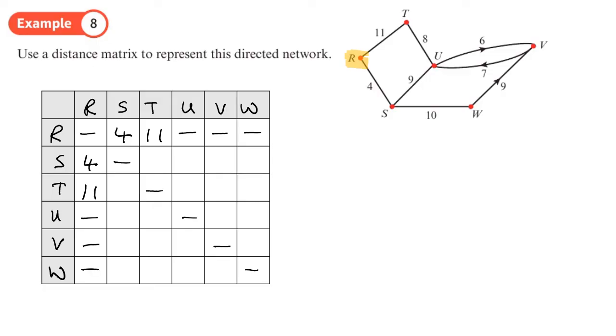So R to S is 4 and S to R is also 4 because that edge isn't directed. R to T is 11 and T to R is also 11 because there's no direction there. There is no edge or distance, direct distance to U, V or W. So we'll put dashes there like that. All right, let's move on to S. That'll be the next one that we do.